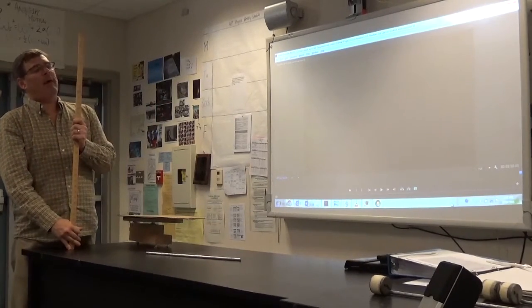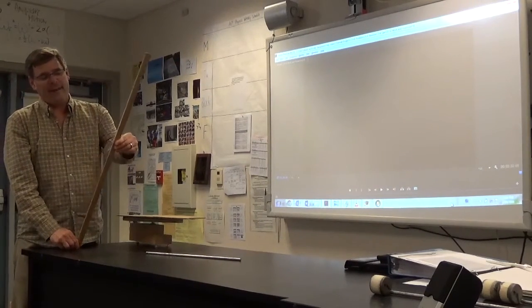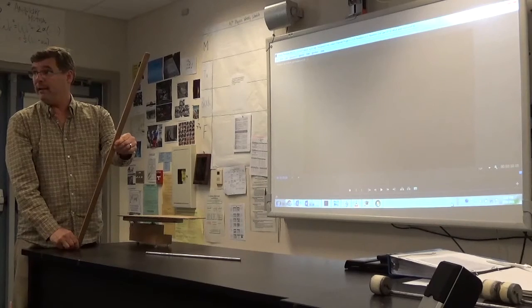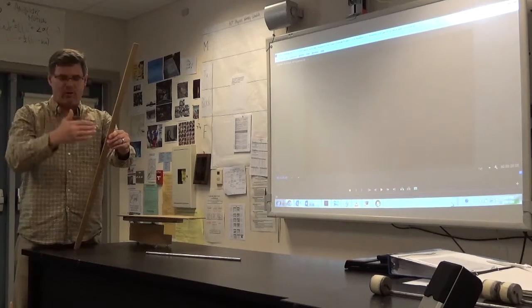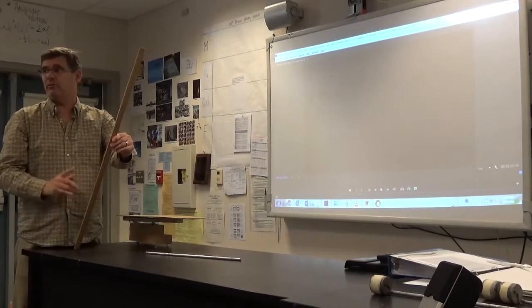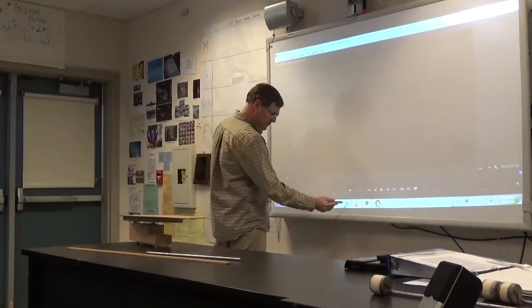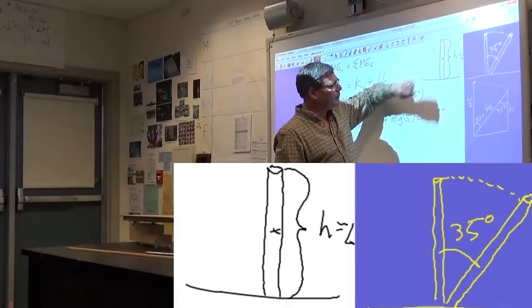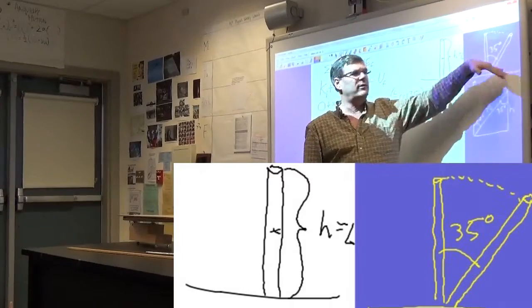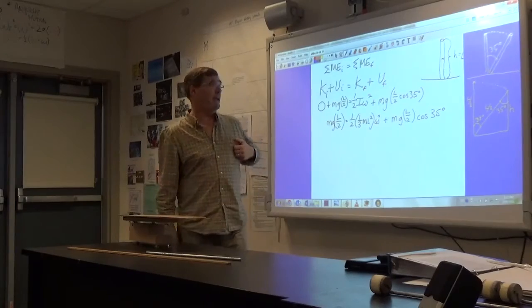In the sample problem, they ask, if it starts here, what is its angular speed, omega, when it reaches the point where the angle between the chimney and the vertical is 35 degrees? So let's draw a picture of that. Here we go. Here's our chimney. And when it reaches 35 degrees, how fast is the chimney rotating now? What is its omega?